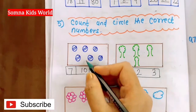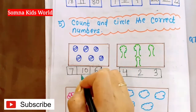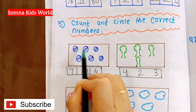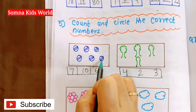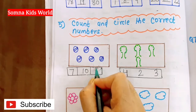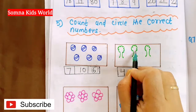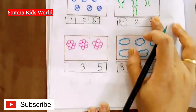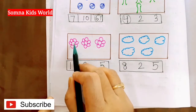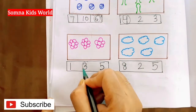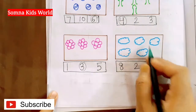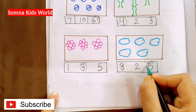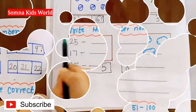Next question: 'count and circle the correct number.' You have to count the objects and circle the correct answer. How many words — 1, 2, 3, 4, 5, 6 — answer is 6. How many next objects — 1, 2, 3, 4 — answer is 4. How many flowers — 1, 2, 3 — answer is 3. How many clouds — 1, 2, 3, 4, 5 — answer is 5.